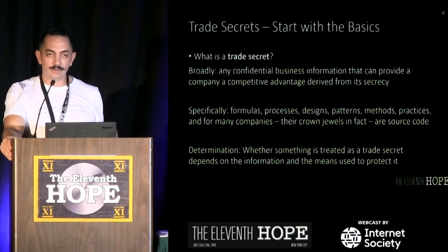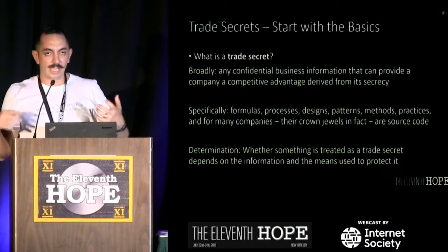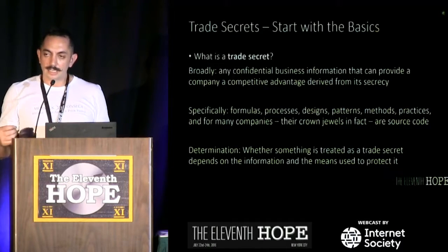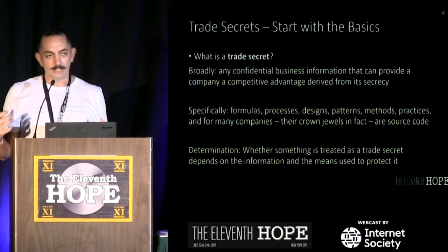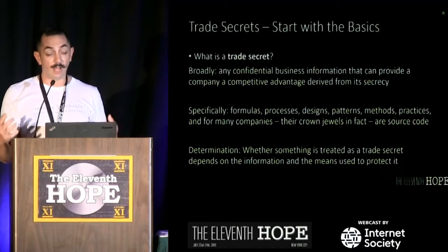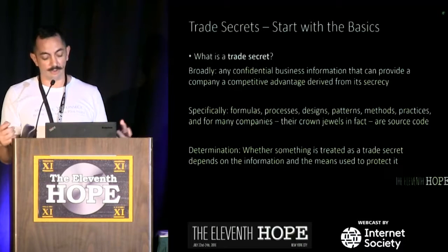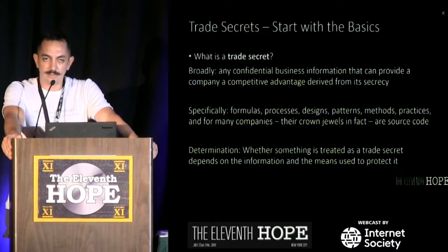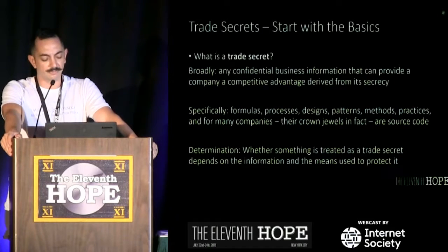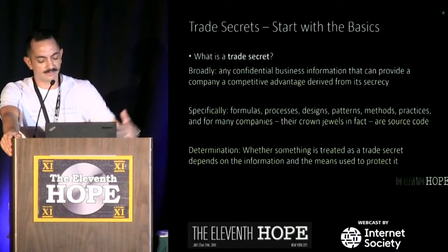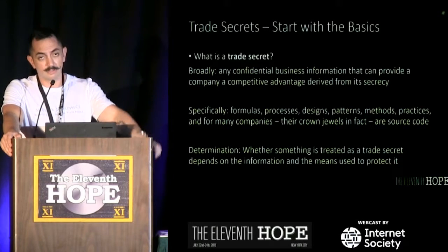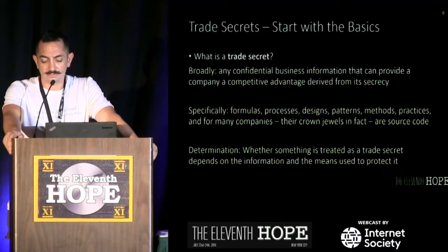What is a trade secret? Very broadly, a trade secret is any confidential information that provides a competitive advantage to a company, and that competitive advantage needs to be derived from its secrecy itself. Under the Uniform Trade Secrets Act, examples include formulas, processes, designs, patterns, methods, practices, and the crown jewels for many companies: source code.